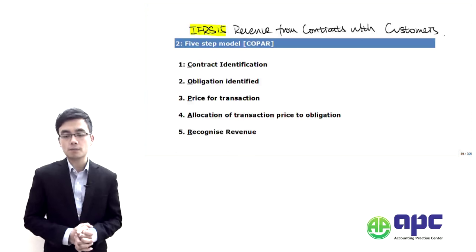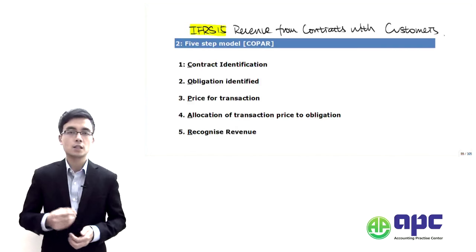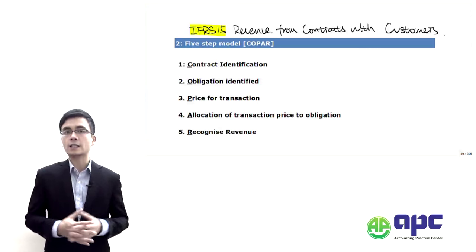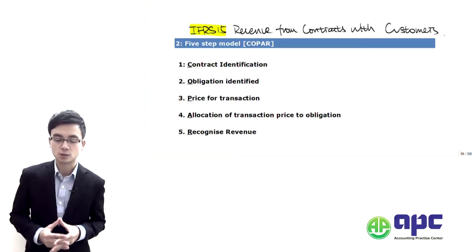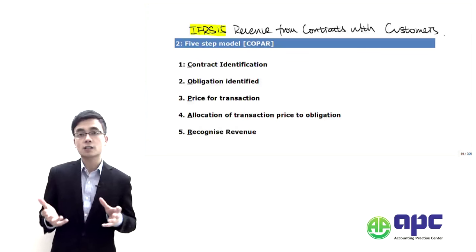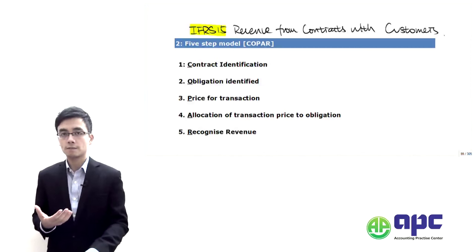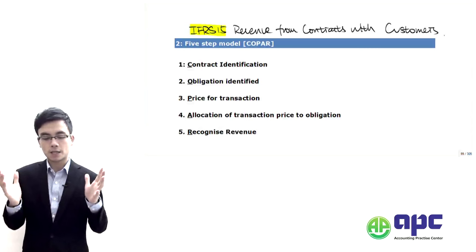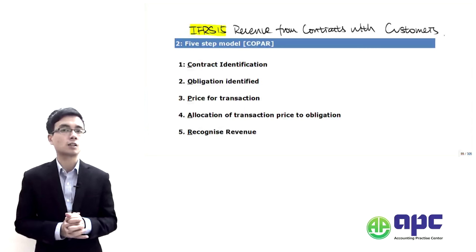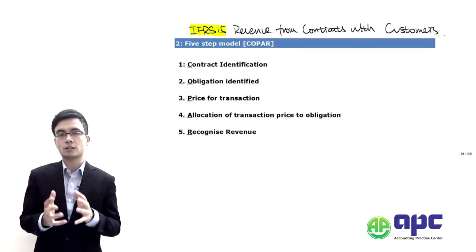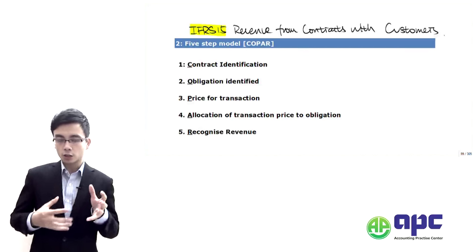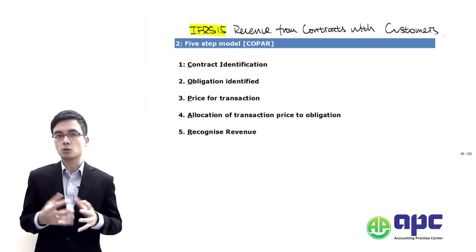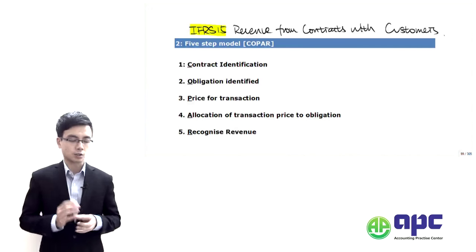IFAS number 15 is to be effective or compulsory on 1st January 2017. The ISB may delay that implementation as well. IFAS number 15 is developed based upon the convergence between the International Financial Reporting Standard and US GAAP, because there are lots of accounting standards detailing revenue recognition and the way they deal with those recognitions are quite different. That's why we're going to create a one-stop shop to combine those revenue recognition principles into this five-step model.